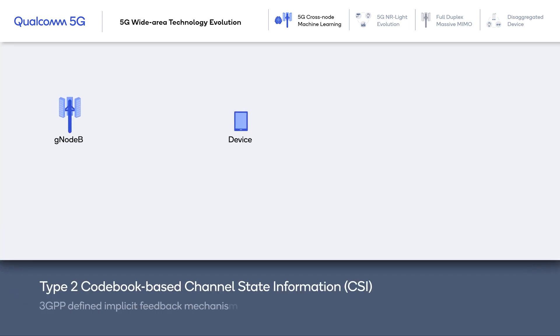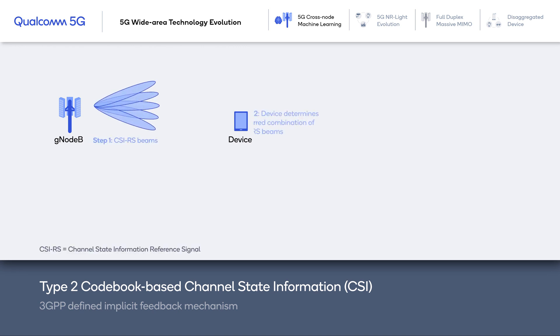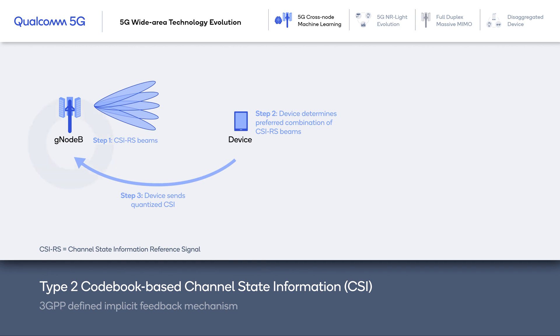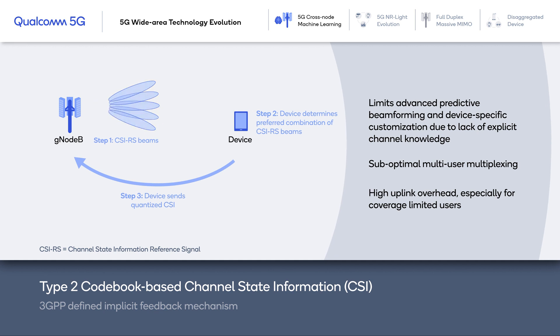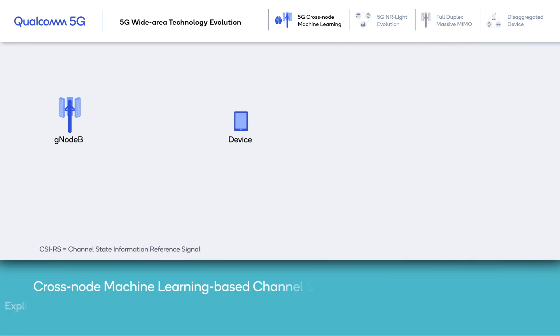In the baseline Release 16 Type 2 codebook-based CSI, the device sends back implicit channel feedback to the network as part of the uplink. The quantized feedback is in the form of preferred downlink-beam combinations.